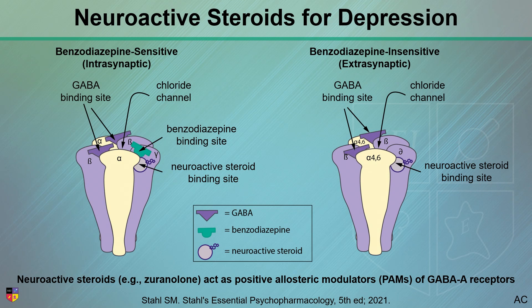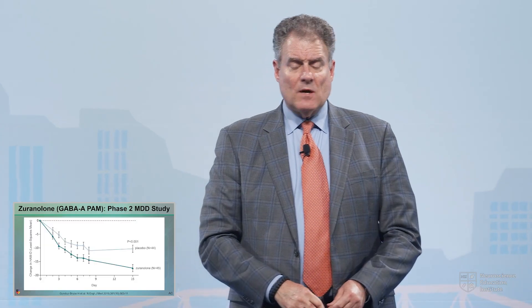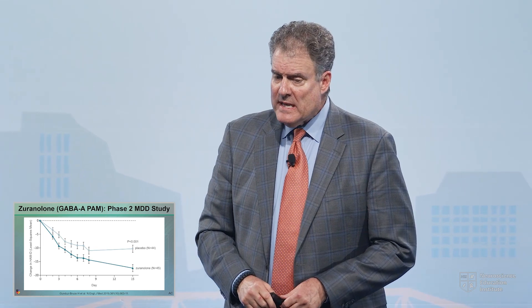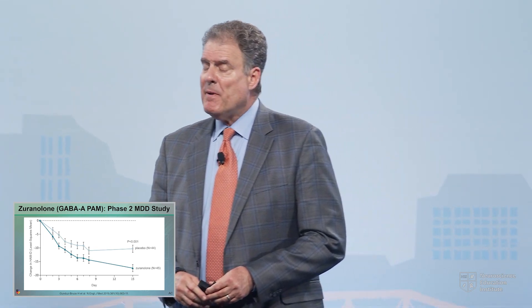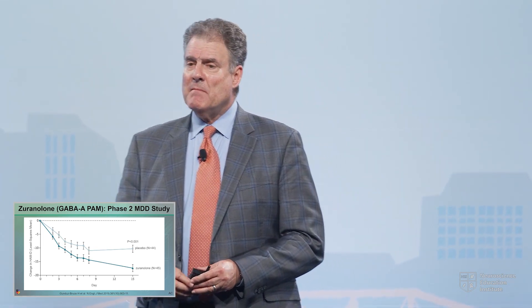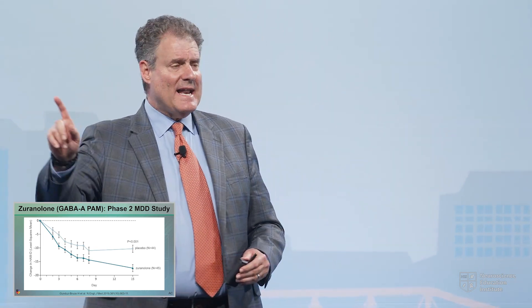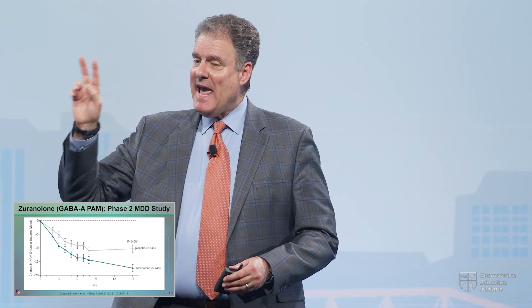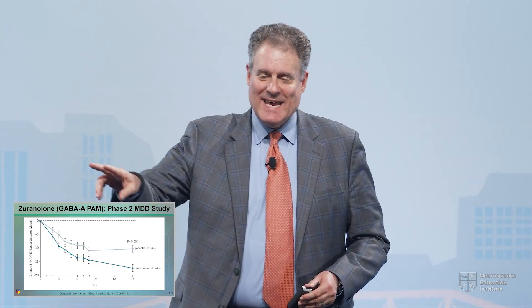On the right, you'll see the extrasynaptic receptors. Benzos don't bind there, but neuroactive steroids do. Here we have a medicine in development called xoranolone. This is a positive allosteric modulator — it's not an agonist, and it acts on GABA-A, not GABA-B. That might help you a little later.